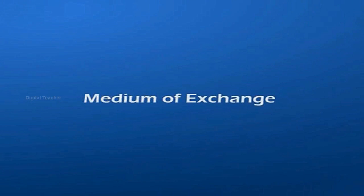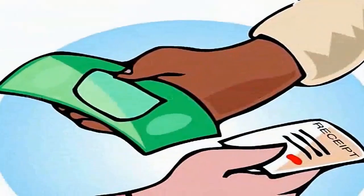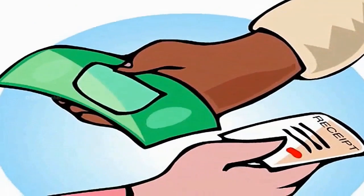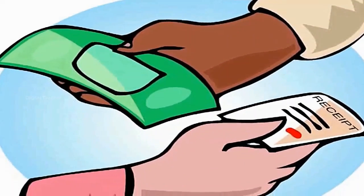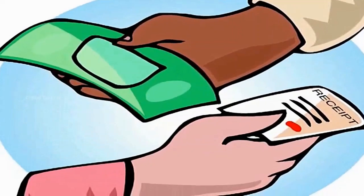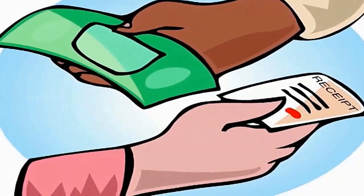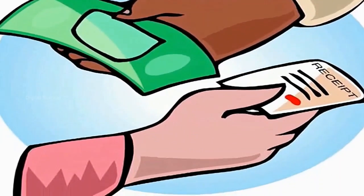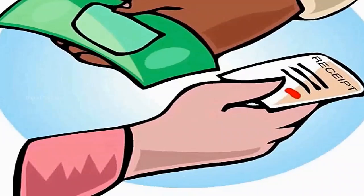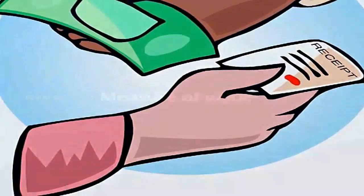Medium of Exchange. Money serves as a medium through which all goods are exchanged one for another. This is the main function of money. It removes the difficulties involved in the barter system of exchanging goods for goods.